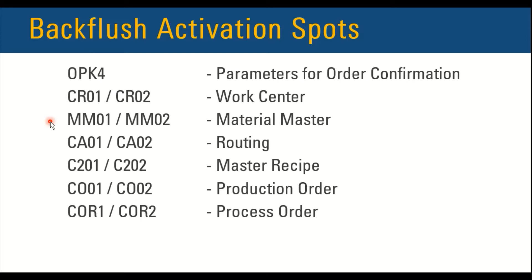After the work center, we have the material master where we can enable backflush for the component. We can also enable it in the routing for discrete manufacturing, and in the master recipe for process manufacturing. Additionally, during execution the backflush can be dynamically updated — the user can manually activate the checkbox in production orders and process orders.